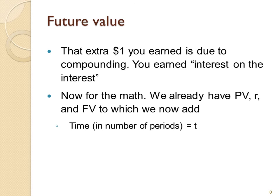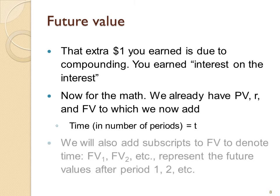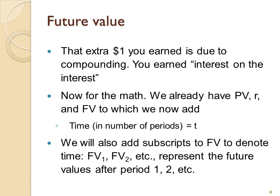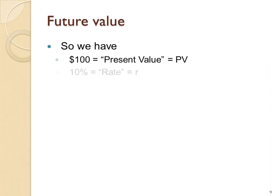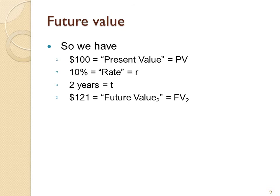Now, let's look at the math of that. We already have present value, the rate, and the future value. Now I'm going to add the time in terms of numbers of periods. So if we add the subscripts to the future value, that allows us to denote the time as future value one, sub one, future value sub two, which means the future values after one period or two periods. We were talking about years here. So that's future value in period year one, year two. So now we have present value, rate, time, and future value after two years.